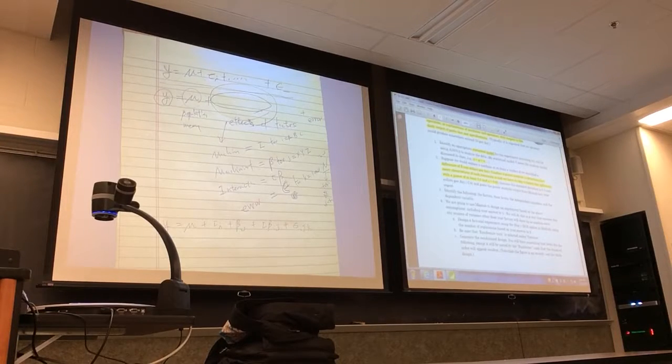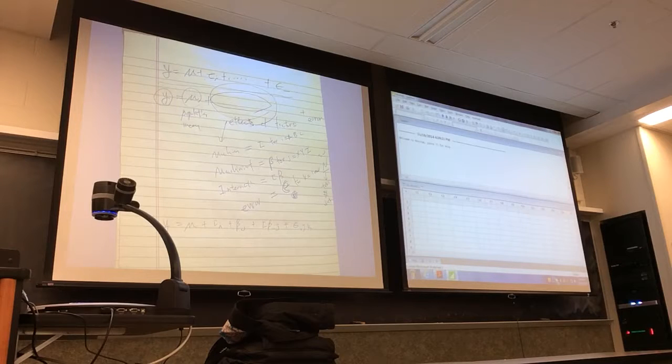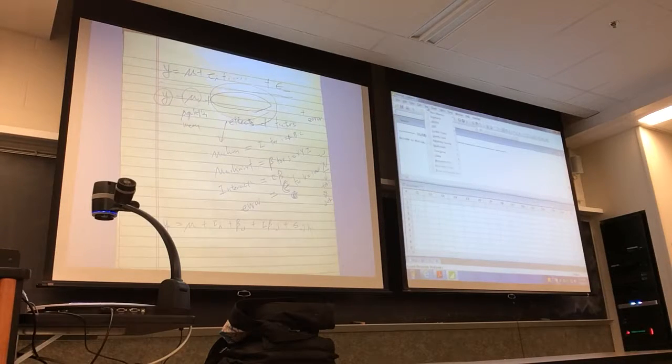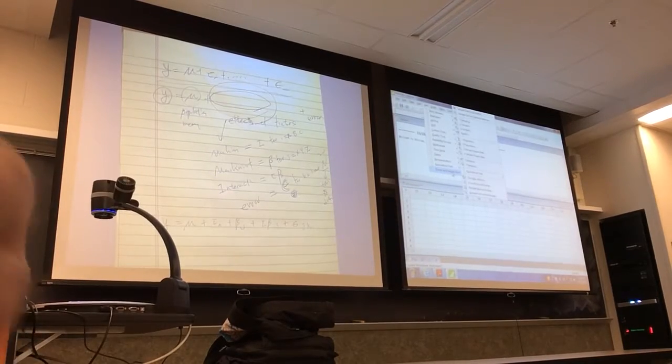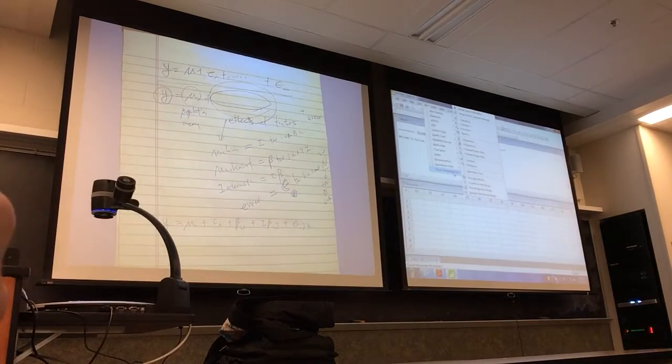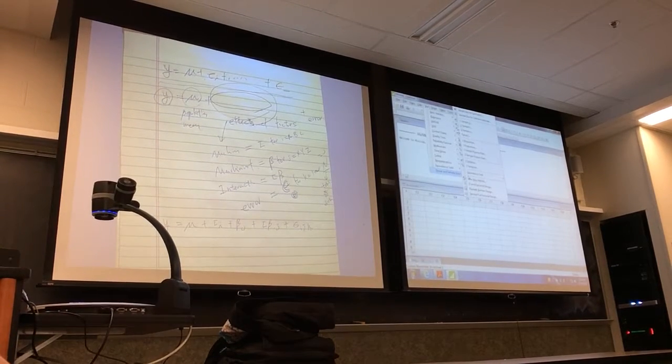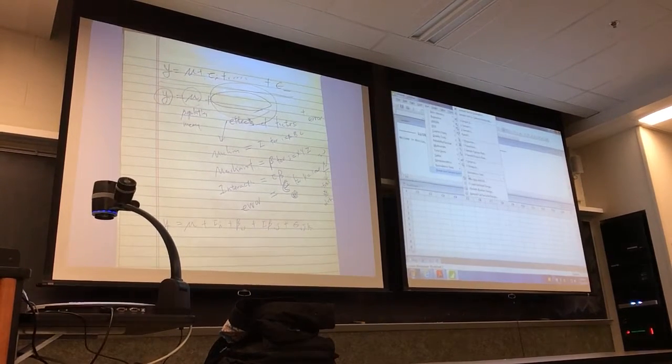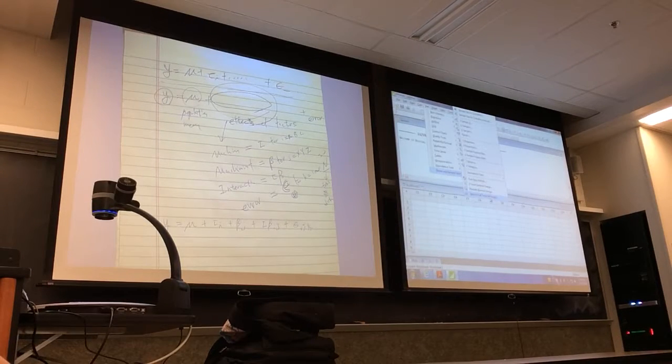Let's go to the Minitab menu here. Go to Stat, then Power and Sample Size. At this point we are not sure whether we're going to use the partial or full factorial design, so I'm just going to go for the general full factorial design.